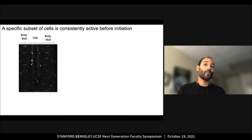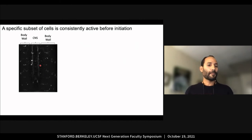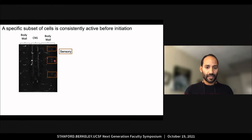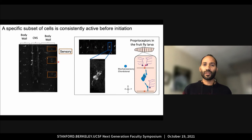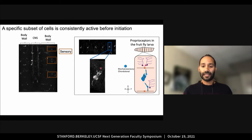Excitingly, we saw a specific subset of cells labeled. This includes a handful of neurons within the CNS and a few neurons in the periphery, indicating that they are sensory neurons. When we zoomed into these neurons, we found that their morphology is characteristic of mechanosensory cordotonal neurons, as you can see in this example and in this schematic.